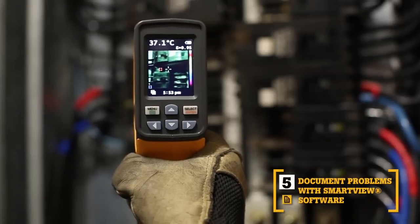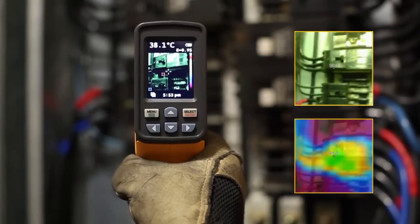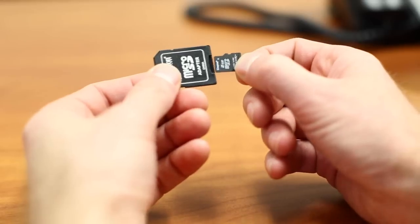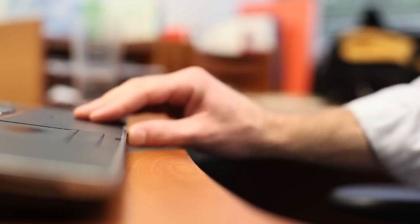The fifth key benefit, Smart View Software. With every pull of the trigger, the VT02 simultaneously saves thermal heat map data and a visual image onto the included microSD card. Then import those images into Smart View Software.